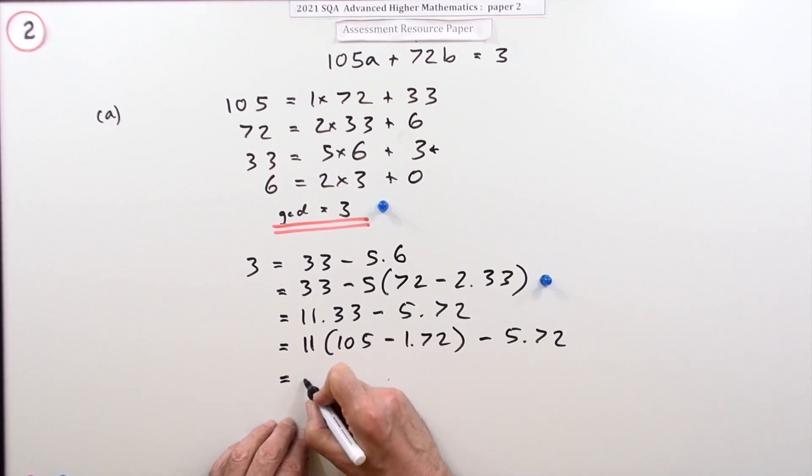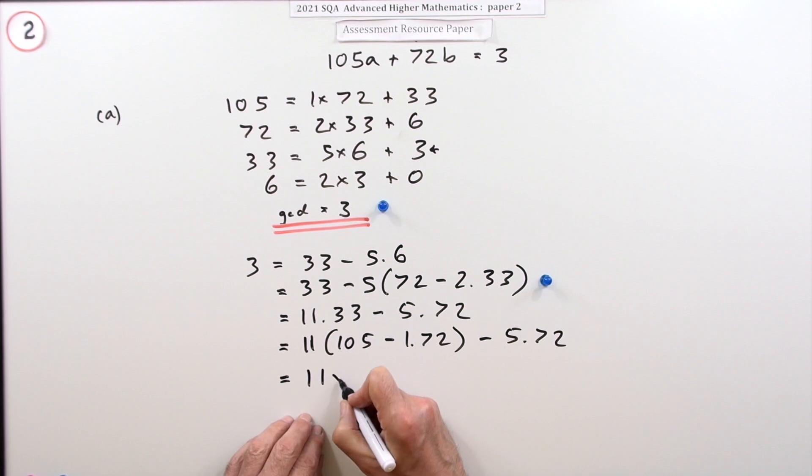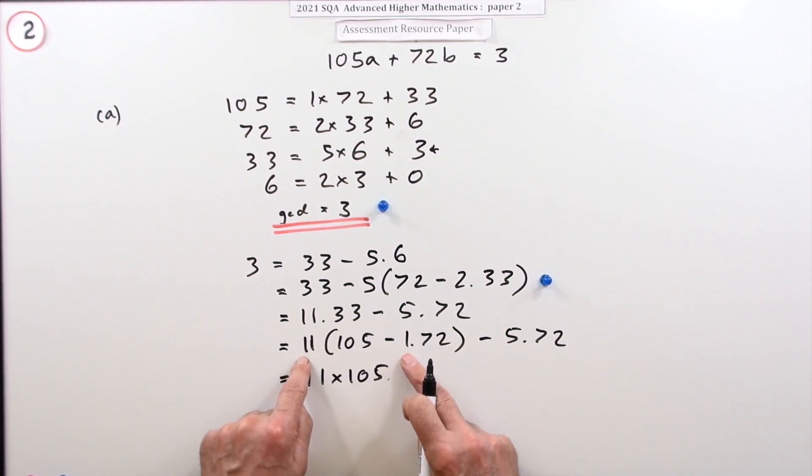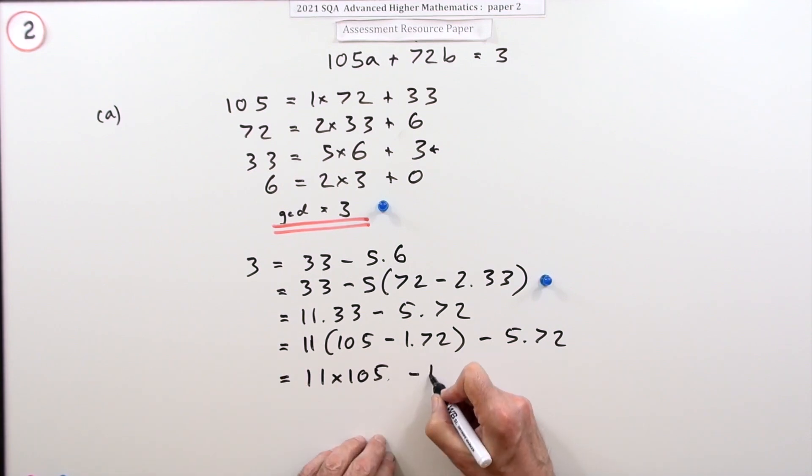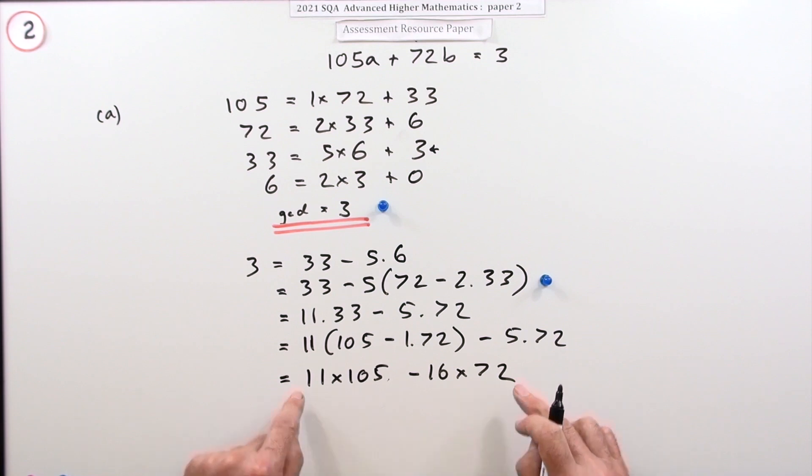There's only one term with 105. So 11 times 105, and minus 11 minus 5, that's minus 16 lots of 72.